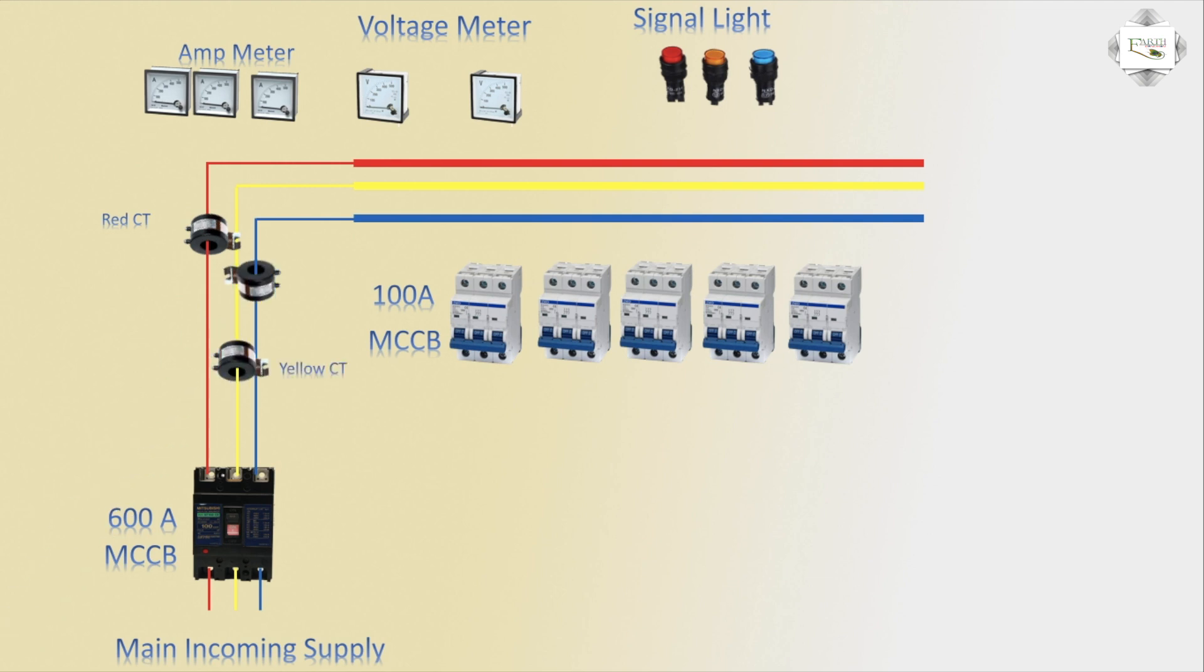For ampere meter connections: the first ampere meter connects to red, the second connects to yellow, and the third connects to blue. The three-phase line per phase—red, yellow, blue—uses three meters total.